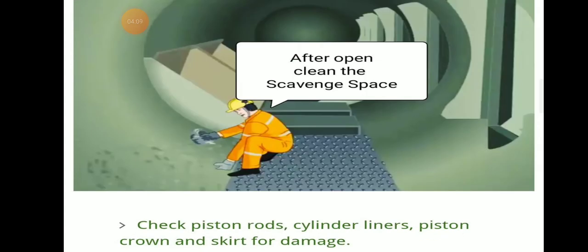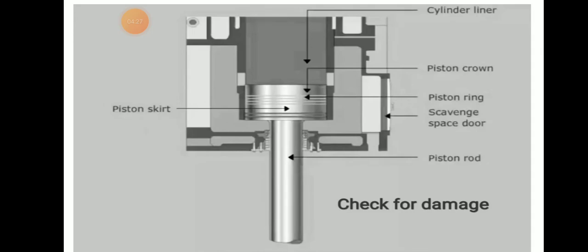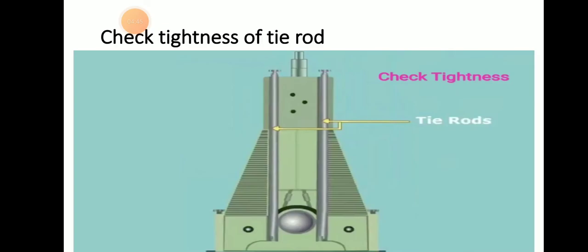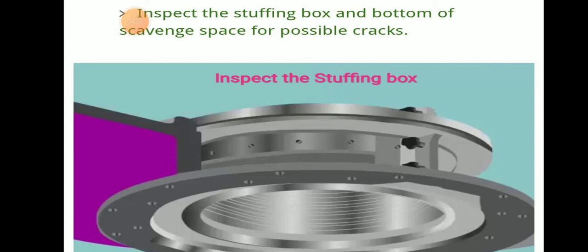After opening the scavenge space, clean it and remove all carbon and sludge deposits. Check the cylinder liner, piston rod, piston crown, piston skirt, piston rings, and scavenge space door for any damage. Also check the tightness of the piston rod, as distress or vibration may have occurred. Inspect the stuffing box and bottom of the scavenge space for possible cracks that could lead to another fire.